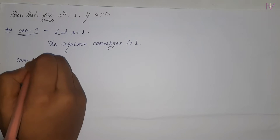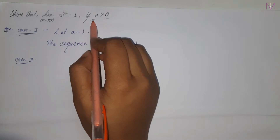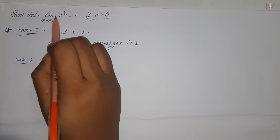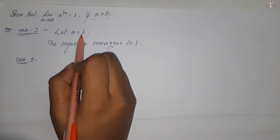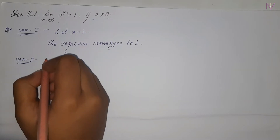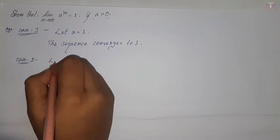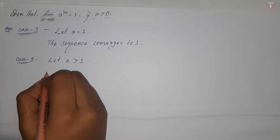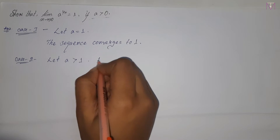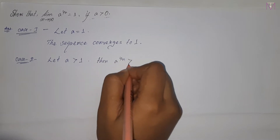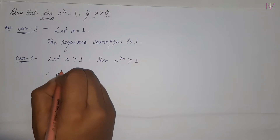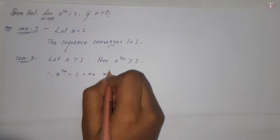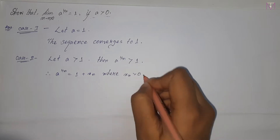Case 2: the condition is a greater than 1. If a is greater than 1, then a to the power 1 by n is obviously greater than 1. So let a to the power 1 by n equal to 1 plus x_n, where x_n is greater than 0 for all n greater than 1.